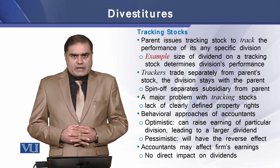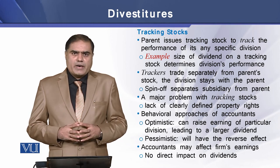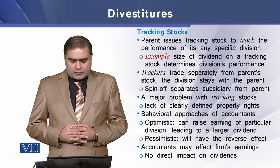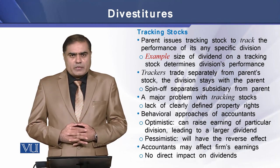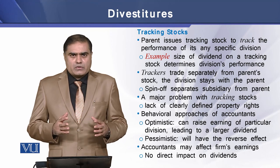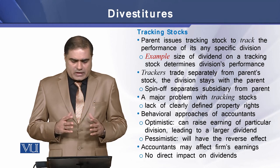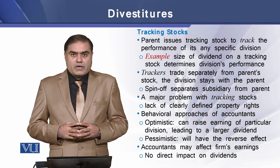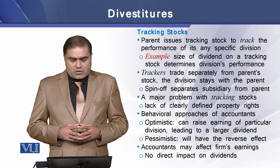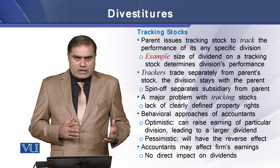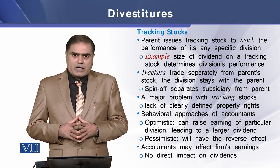There is a major problem with tracking stocks, and that is the lack of clearly defined property rights on the stocks issued. Looking at some behavioral approaches of accountants in this case, an optimistic accountant can raise the earnings of a particular division, thereby leading that division to a larger dividend. A pessimistic accountant, on the other hand, will have the reverse effect.